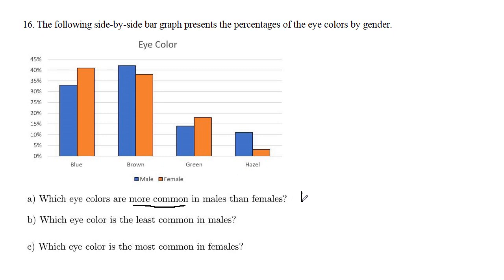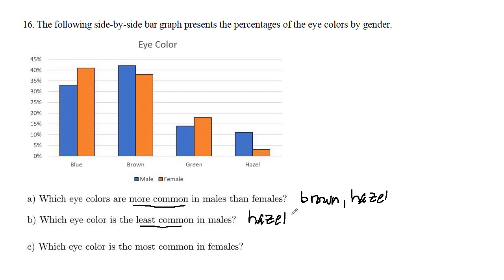So the answer is brown and hazel. Then, which eye color is least common in males — we're only looking at the blue bars, and the shortest blue bar is for hazel. And which eye color is most common in females — we're only looking at the orange bars, and the highest orange bar is for blue.